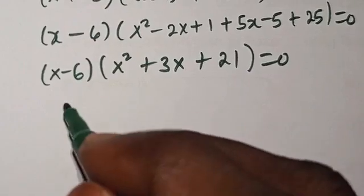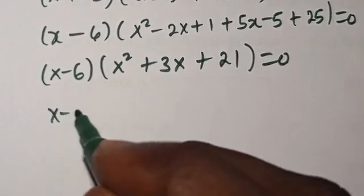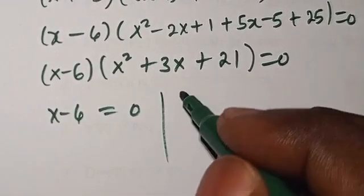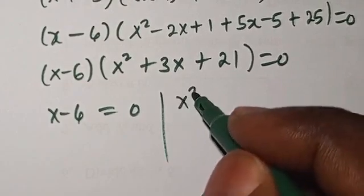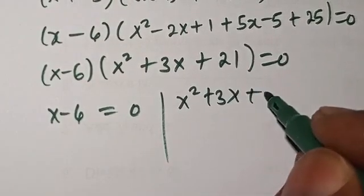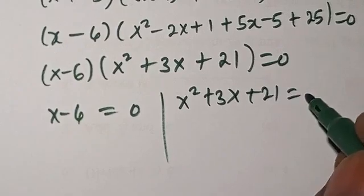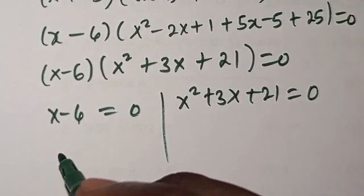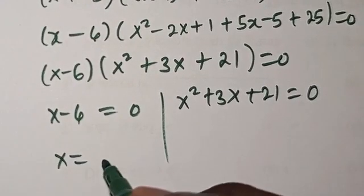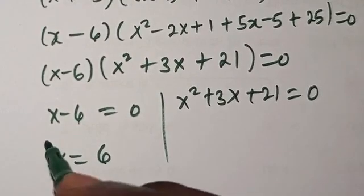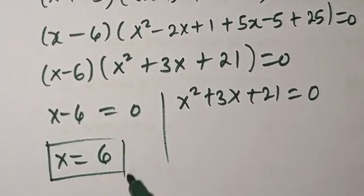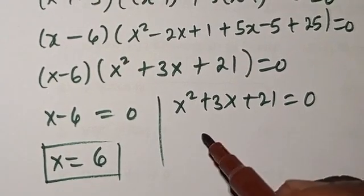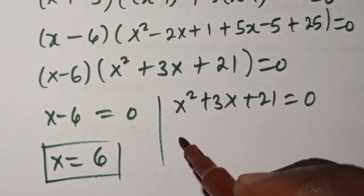So now we can see here we have x minus 6 equals 0, or we have x squared plus 3x plus 21 equals 0. So from here, x is going to be 6. So we have one solution here. Now let's try to solve this one further.